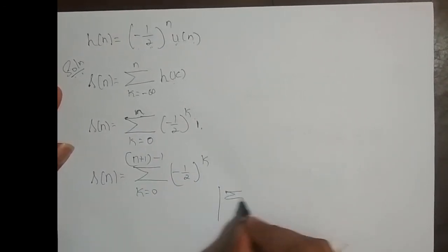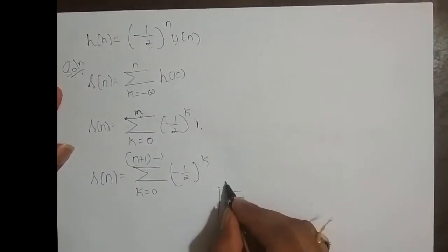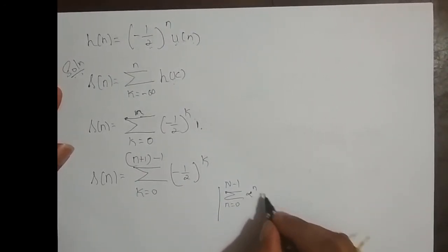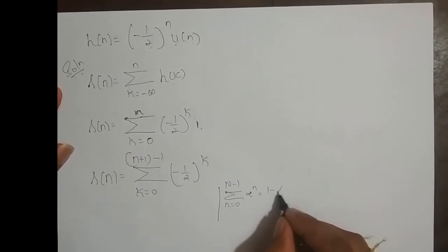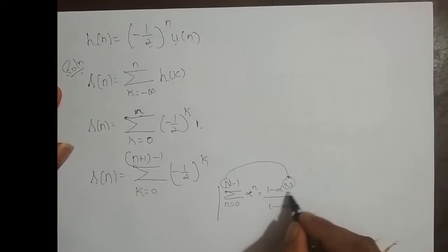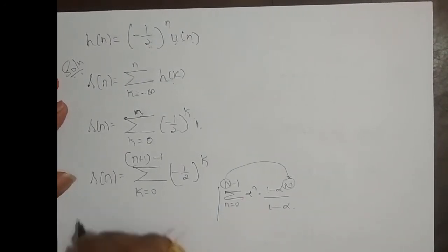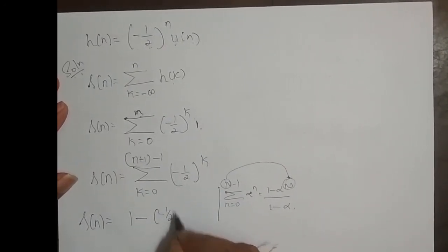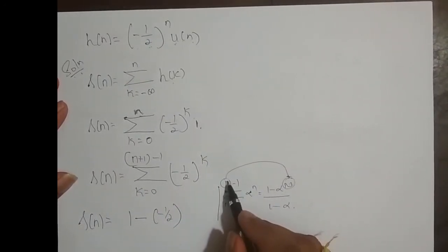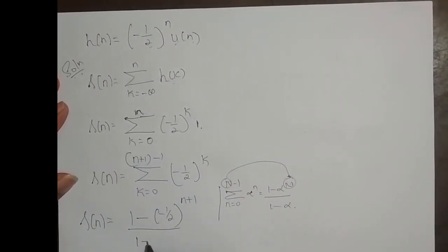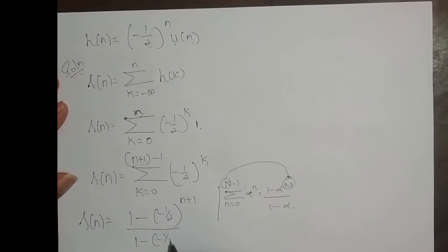The reason I wrote it like this is because I wanted it in the standard form. What is the standard form? Summation n varying from 0 to n minus 1 of alpha power n equals 1 minus alpha power capital N, divided by 1 minus alpha. So this n has to be the power in alpha on the right-hand side. If I apply this standard result, what do I get? 1 minus — what is alpha? Minus 1 by 2 — and this capital N, meaning what I have in the bracket, is small n plus 1, whole divided by 1 minus alpha, which is minus 1 by 2.